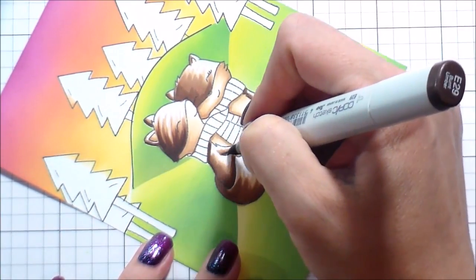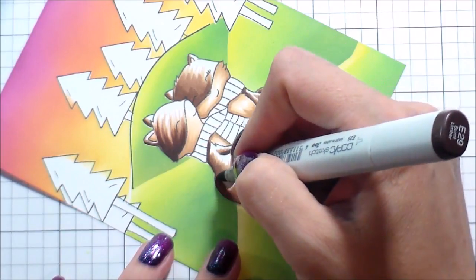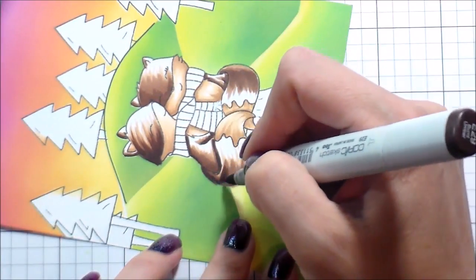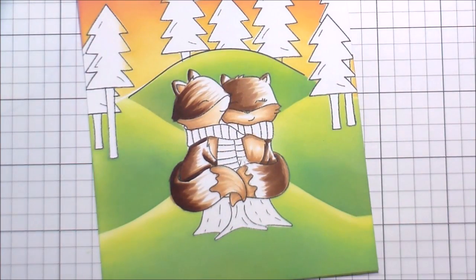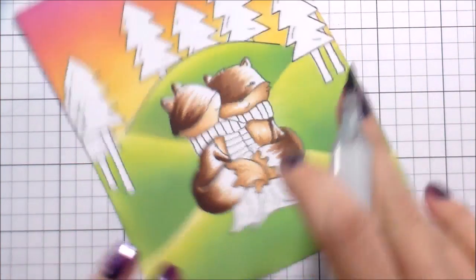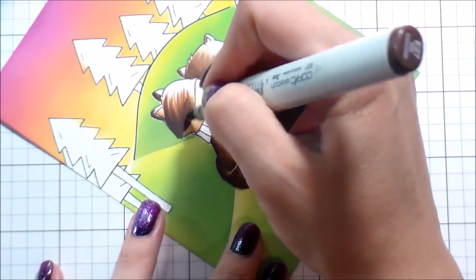This will help to show that they are separate and that maybe they have some different coloring, but I'm only adding the E29 really to the areas that are going to be the darkest. So definitely underneath the scarf, definitely where that tail's sitting on top of his body.